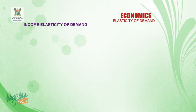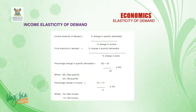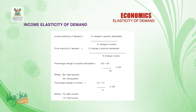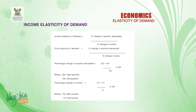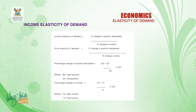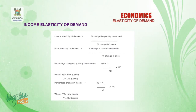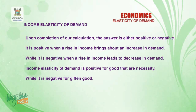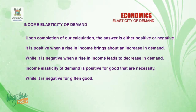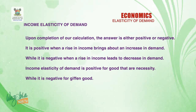Now to income elasticity of demand. It is measured with this formula: percentage change in quantity demanded divided by percentage change in income. Percentage change in quantity demanded equals Q2 minus Q1, all over Q1, multiplied by 100, where Q2 is the new quantity and Q1 is the old quantity. Percentage change in income equals Y2 minus Y1, all over Y1, multiplied by 100, where Y2 is the new income and Y1 is the old income. Upon completion of our calculation, we arrive at either a positive or negative result. It is positive when a rise in income leads to an increase in demand, and it is negative when a rise in income leads to a decrease in the quantity demanded of that particular commodity.